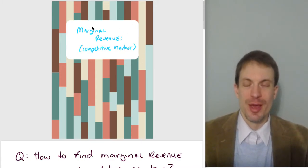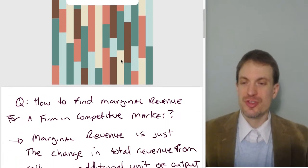And I might as well just say it right away. Marginal revenue for a firm in perfect competition is just the market price. Price equals marginal revenue equals demand for an individual competitive firm. So let's see why.